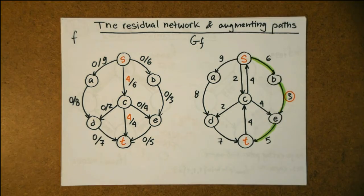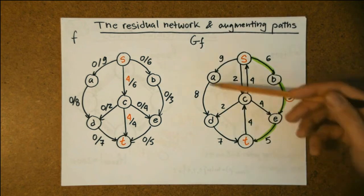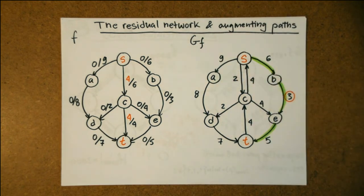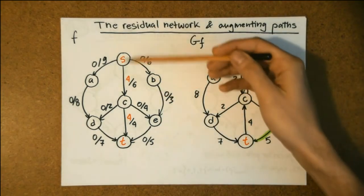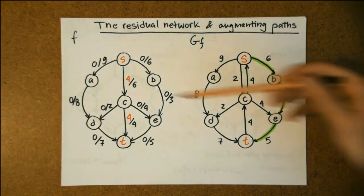For an arbitrary flow network F, the residual network GF has the same vertices as the original network and one edge or two anti-parallel edges for each original edge. If there is a flow along an edge SC there is a backward edge CS of capacity equal to the flow on SC. If the flow along an edge SC is less than its capacity there is also a forward edge SC in the residual network of weight equal to the difference between the capacity of SC and the flow we put on it.